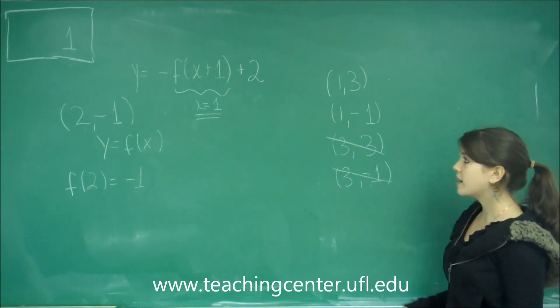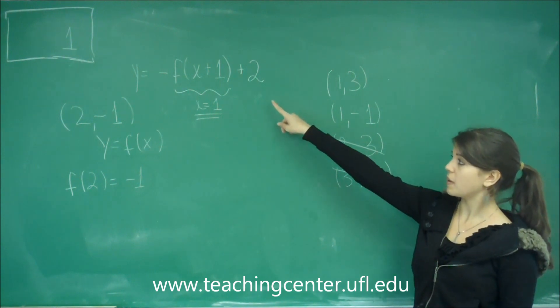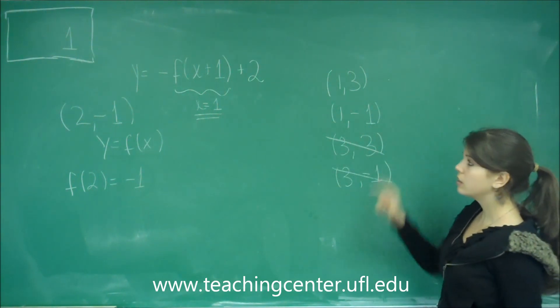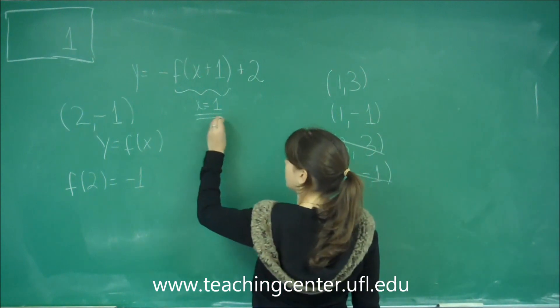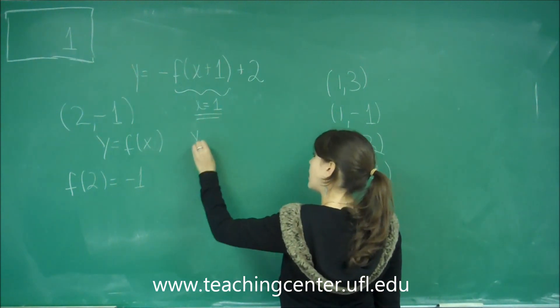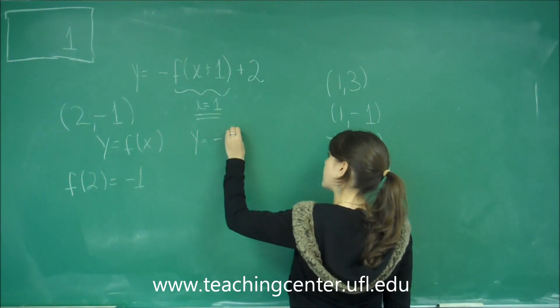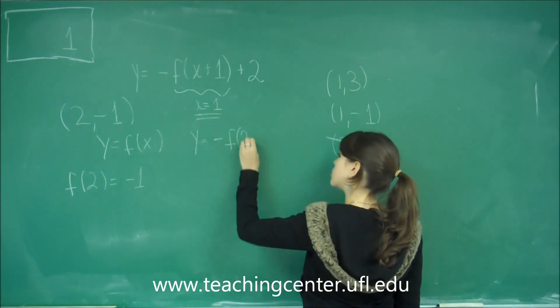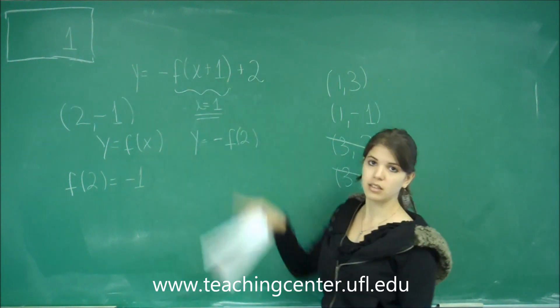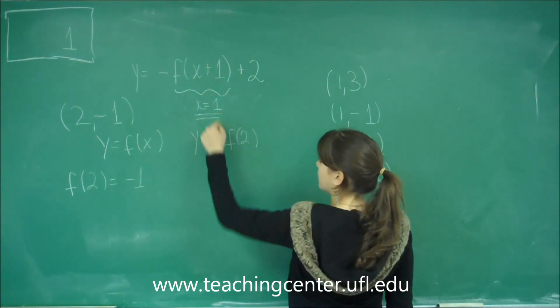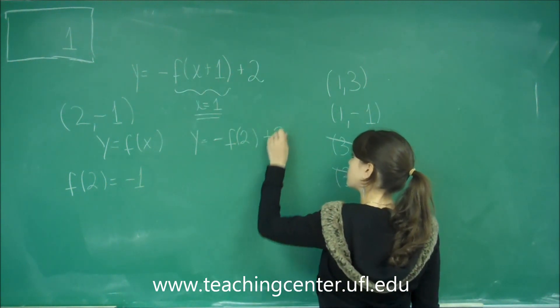So now it's a matter of seeing if that value that we get here ends up being 3 or negative 1. So let's go ahead and plug this in. So if x is 1, then we're trying to find f of 2, because we're just plugging in the 1 into here. So we get negative f of 2 plus 2.